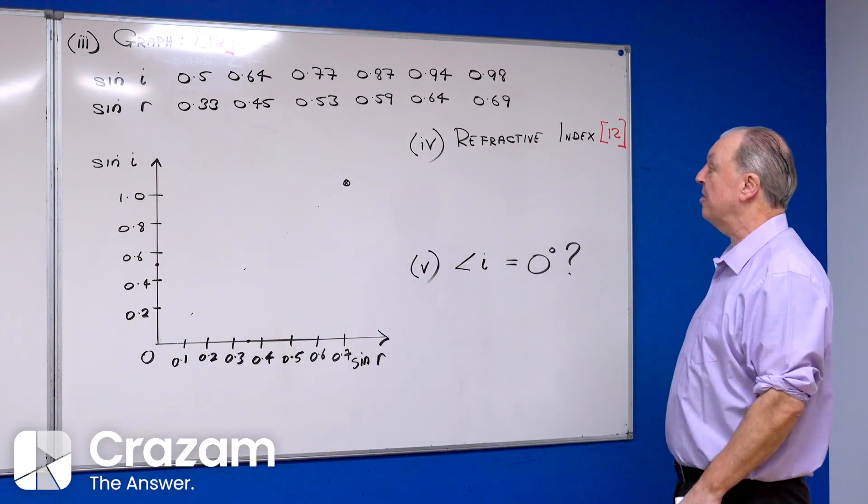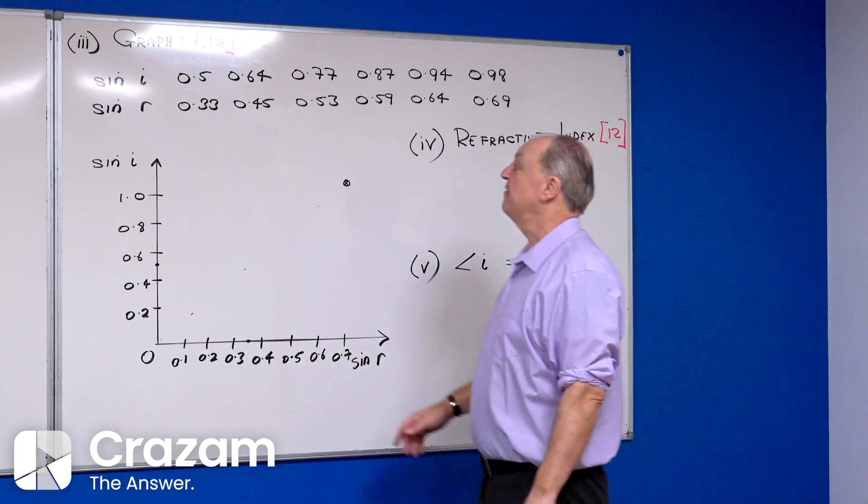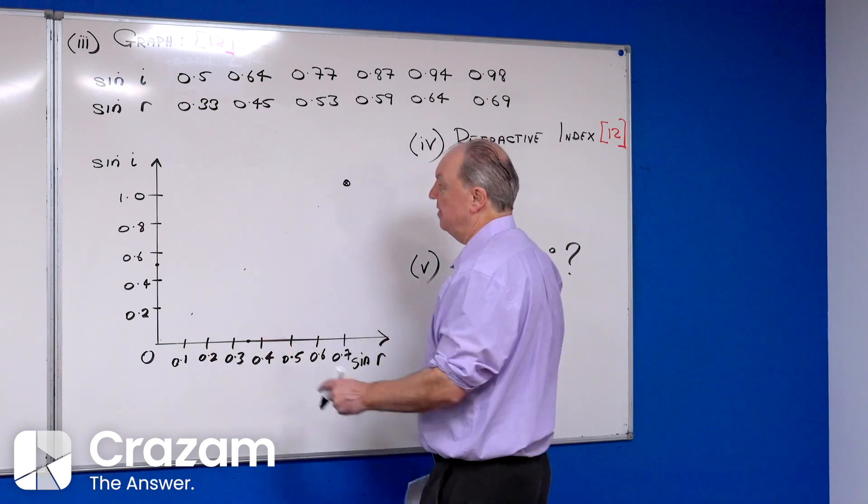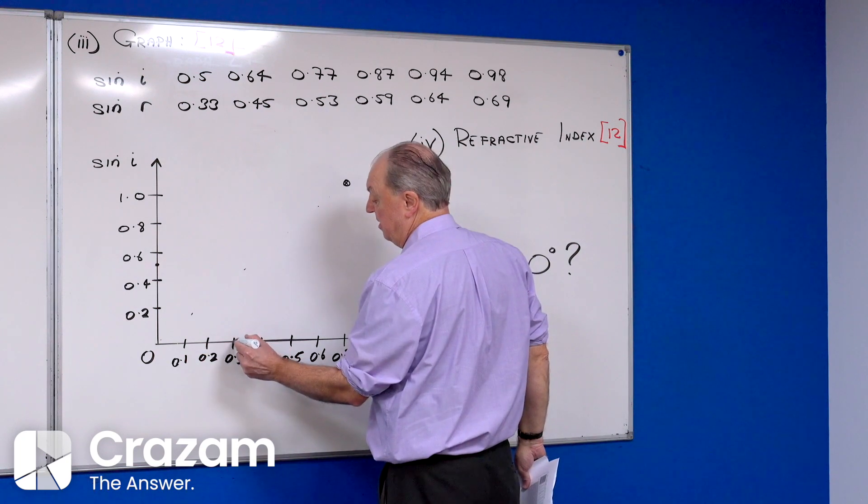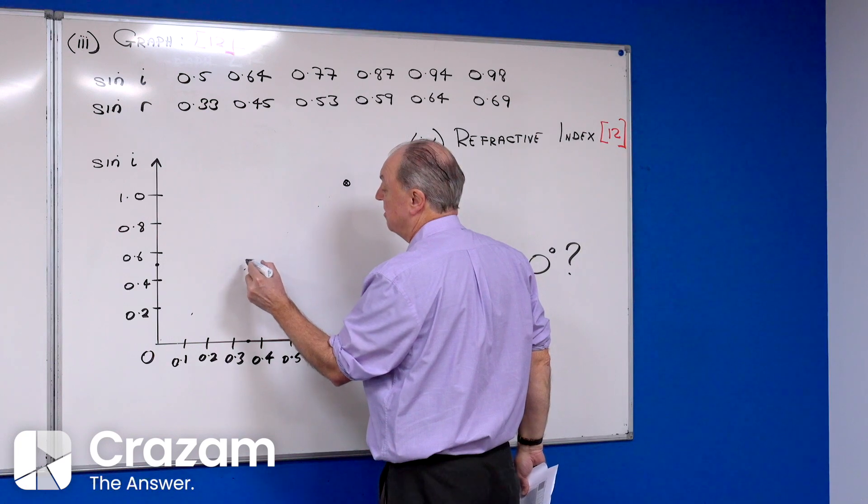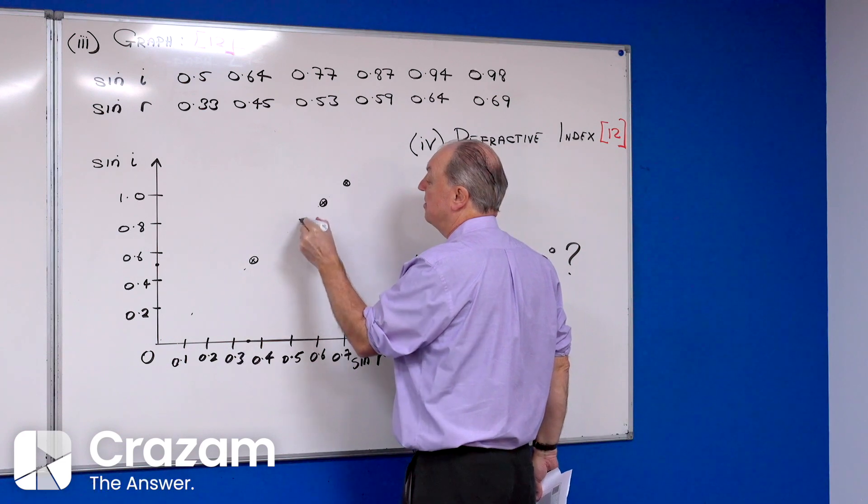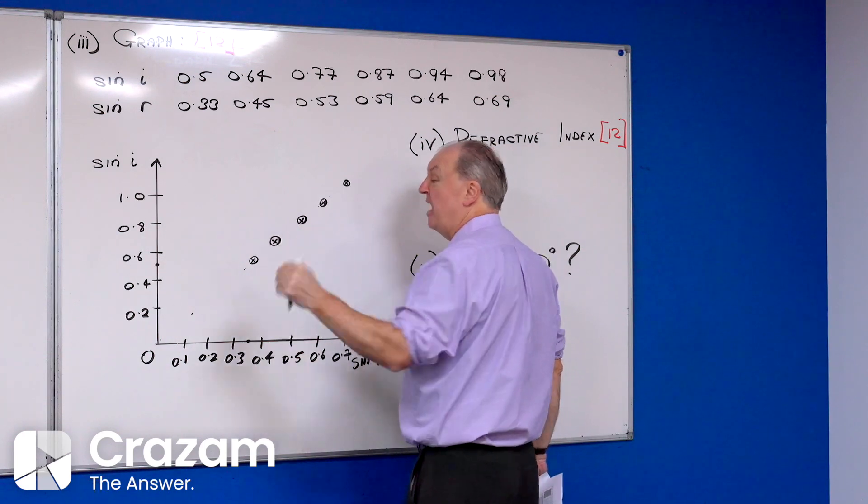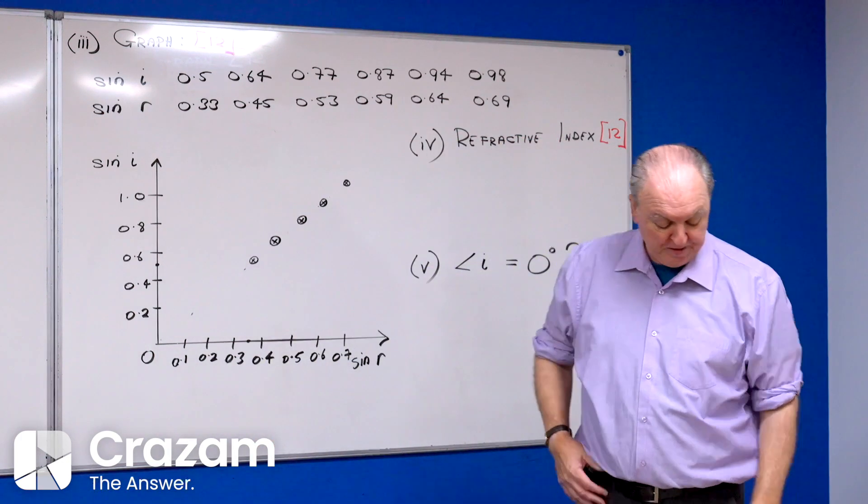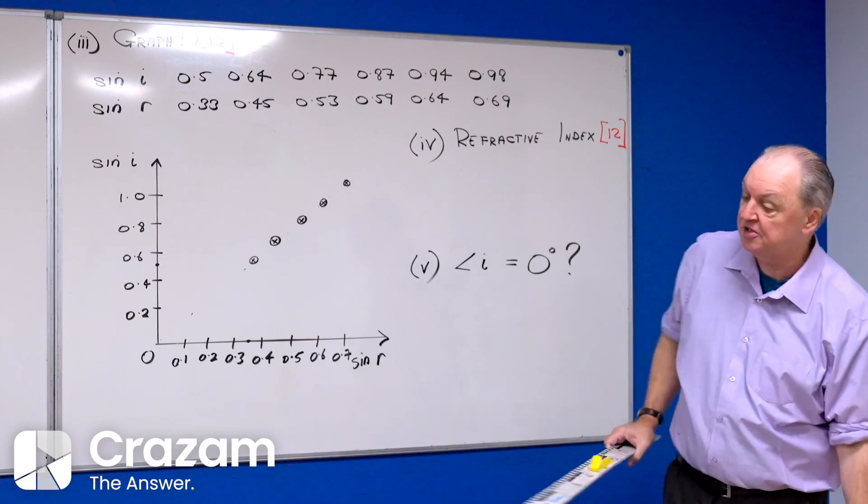Now I'm ready to draw my graph. Put in all your points very carefully. My first point is sine r at 0.33, sine i at 0.5. Put in all your various points. I'm going to do them roughly; you're obviously going to do them more accurately. Put in all my points, and then you want to get the line of best fit.